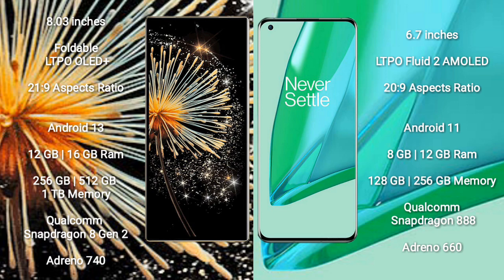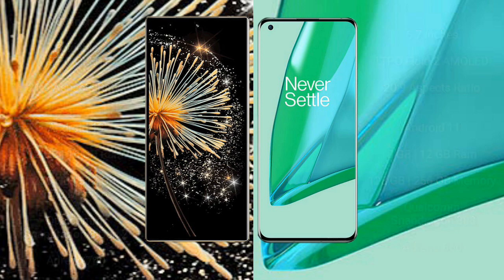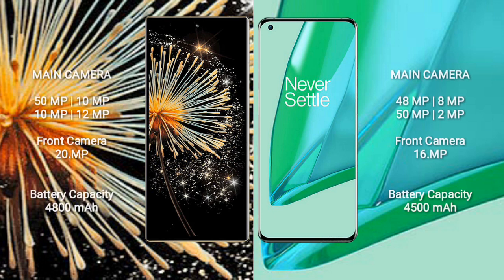The OnePlus 9 Pro comes with 8GB or 12GB of RAM and 128GB or 256GB of internal storage. It is powered by the Qualcomm Snapdragon 888 processor with an Adreno 660 GPU.